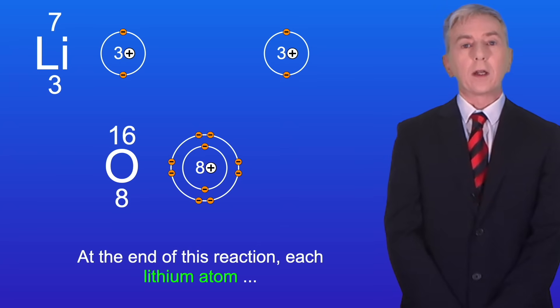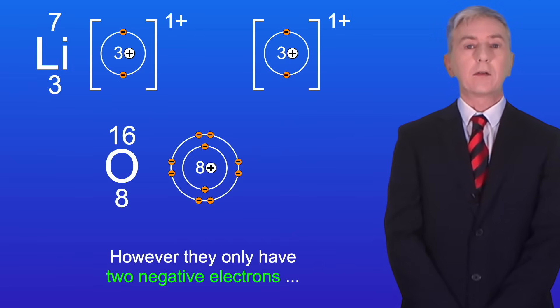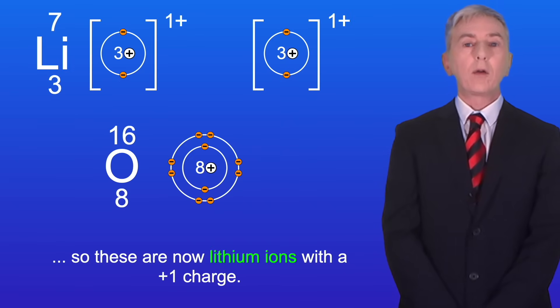At the end of this reaction, each lithium atom still has three positive protons in their nucleus. However, they only have two negative electrons, so these are now lithium ions with a positive 1 charge.